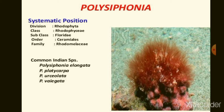Polysiphonia comes under Division Rhodophyta, Class Rhodophyceae, Subclass Florideae, Order Ceramiales, and Family Rhodomelaceae. Common Indian species that have been reported include Polysiphonia elongata, Polysiphonia polycarpa, Polysiphonia urceolata, and Polysiphonia virgata.